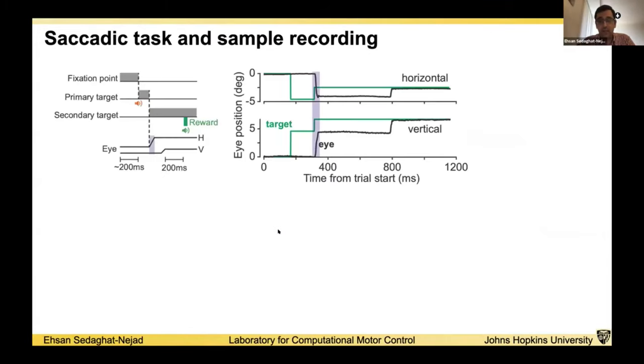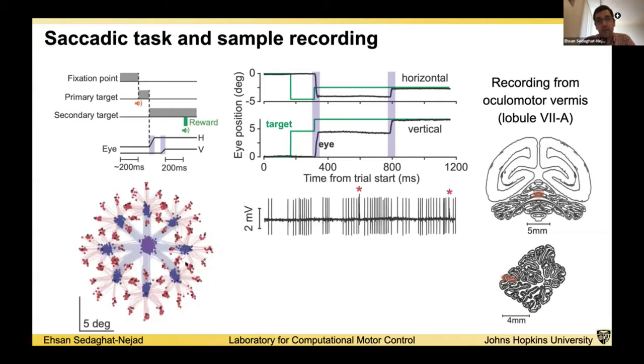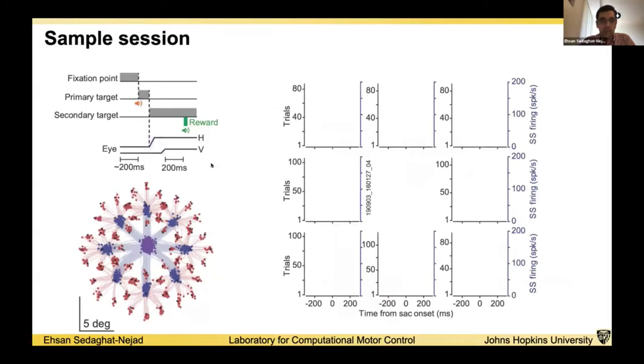Our task consists of two saccades: a primary saccade and a secondary saccade. The primary saccade can be in one of eight random directions. The secondary saccade can also be in one of eight random directions. While the monkey is doing these saccadic tasks, we are recording from the oculomotor region of the cerebellum, lobule 7a in marmosets. Later, using the PSORT software, we sorted the simple spikes and complex spike activity of the cerebellar Purkinje cells.